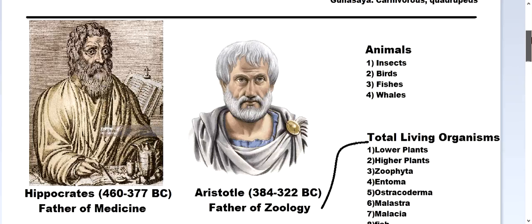Some Greek scholars then continued this work. Hippocrates, the father of medicine, came about 140 years after 600 BC and classified animals into insects, birds, fishes, and whales — a limited but notable classification attempt.